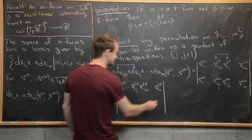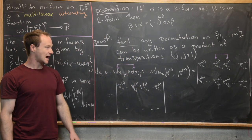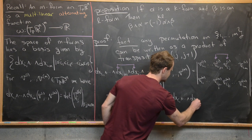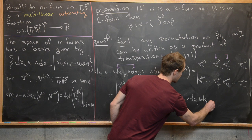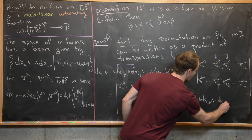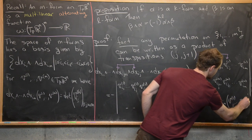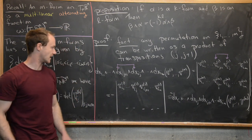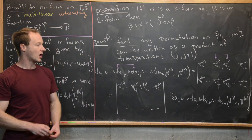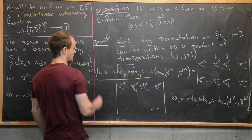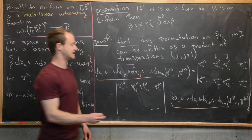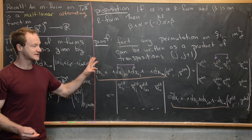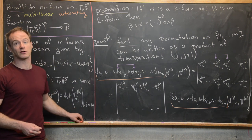This is exactly equal to the unswitched elementary form dxᵢ₁ ∧ ··· ∧ dxᵢⱼ ∧ dxᵢⱼ₊₁ ∧ ··· ∧ dxᵢₘ evaluated on v¹,…,vᵐ — but with a minus sign. So a single adjacent switch picks up exactly one minus sign. Since this holds for arbitrary input vectors, the switched m-form equals the negative of the unswitched one. This is all the preparation we need to prove the proposition.